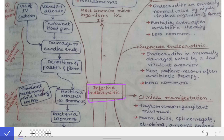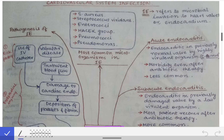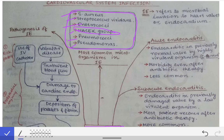We will cover this chapter in just a single page. The causative organisms of infective endocarditis include Staph aureus, Streptococcus viridans, Enterococci, the HACEK group of bacteria (which includes Haemophilus and others), Pneumococcus, and Pseudomonas. The definition is the microbial invasion of the heart valves or the endocardium.